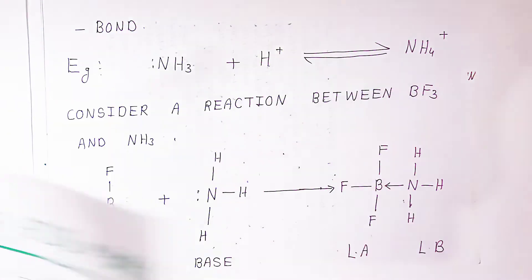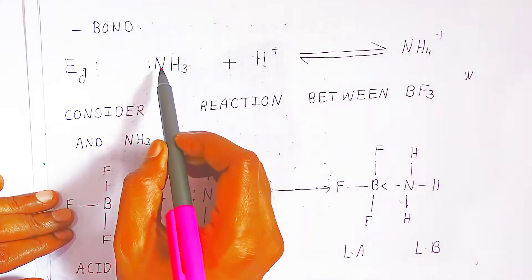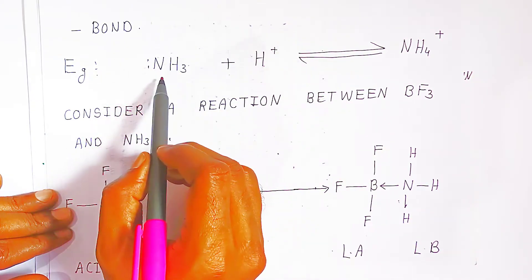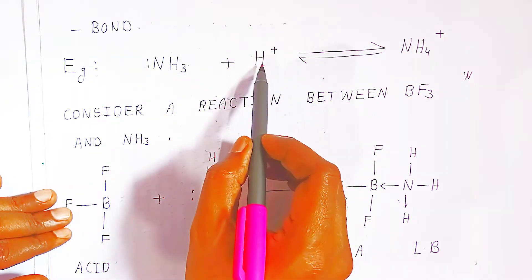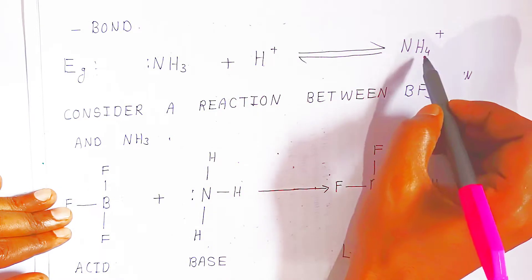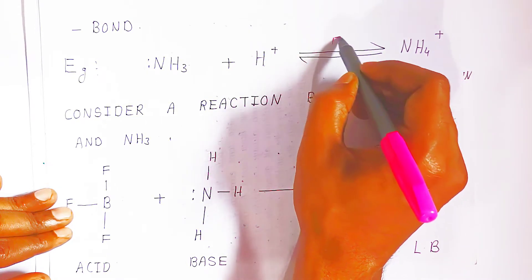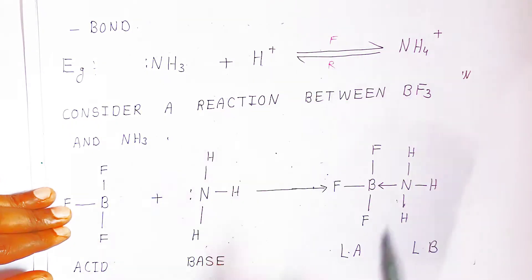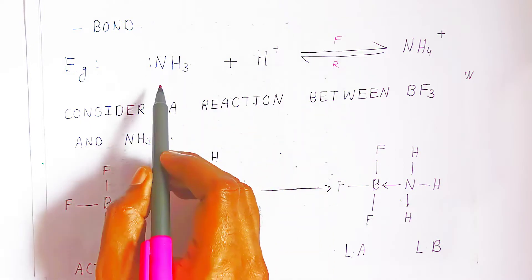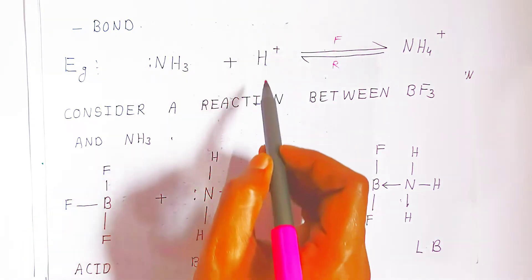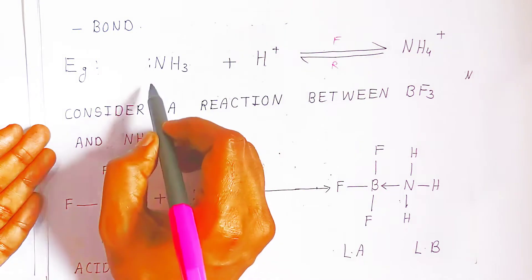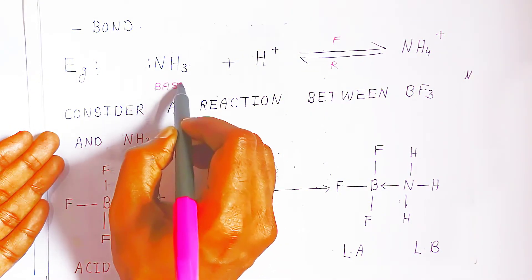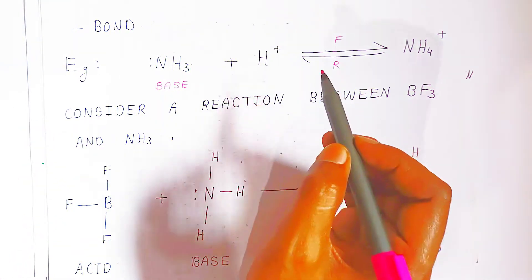Let's see an example with ammonia. In ammonia, nitrogen has a lone pair. Ammonia donates this lone pair to H⁺ ion to form ammonium. There is a forward reaction, and since ammonium is unstable, a reverse reaction also occurs. So ammonia is acting as a base, and H⁺ is accepting electrons — that is why H⁺ is called an acid.